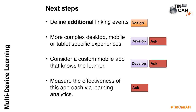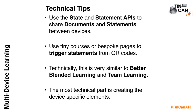Going further: define additional events and design more complex desktop and mobile experiences. You can now go all out on your desktop course without worrying about mobile, since you're using the mobile device for another element. Consider a custom mobile app that knows who the learner is so they don't have to enter their details every time. You've got all that data, so you can measure effectiveness via learning analytics. Technically this is very similar to the Better Blended Learning and Team Learning examples.